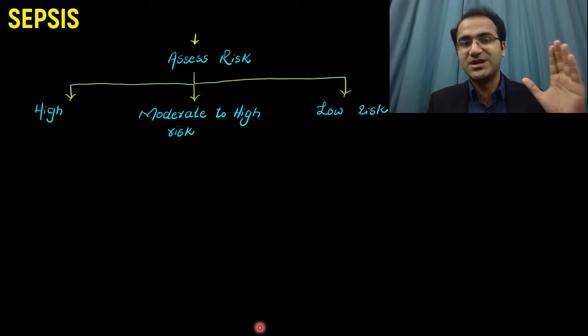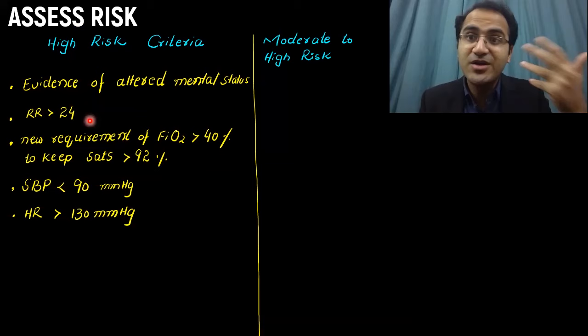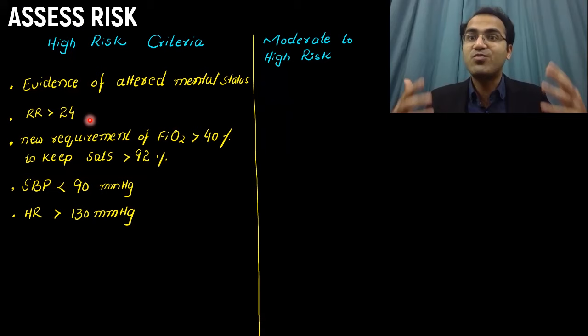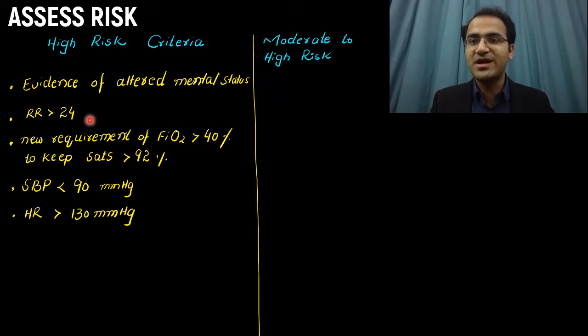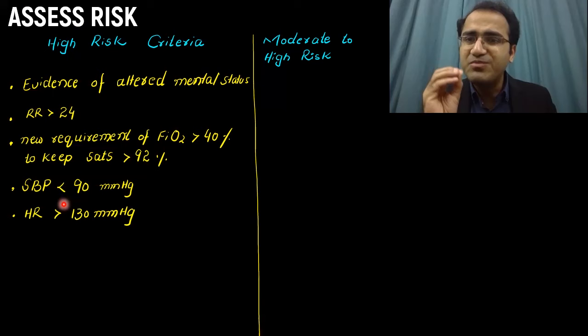High risk criteria include: evidence of altered mental status; respiratory rate greater than 24 — these patients have acidosis due to lactate buildup, and the body compensates by increasing respiratory drive to wash out carbon dioxide; new requirement of FiO2 greater than 40% to keep saturation above 92%; and systolic blood pressure less than 90 mmHg. Patients with systolic blood pressure less than 90 mmHg are in the high risk category.